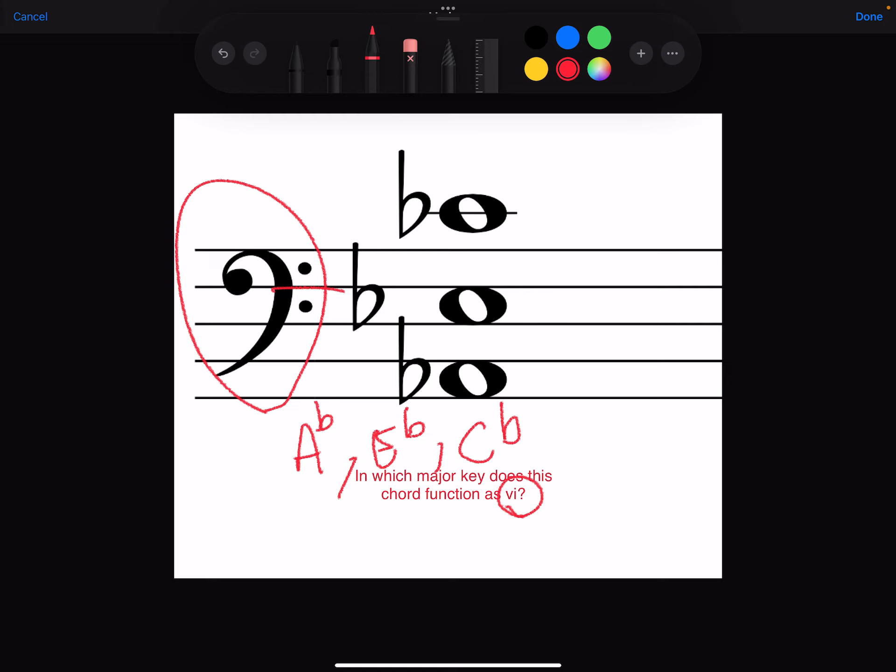And so what we have to do is figure out what key is this chord the sixth scale degree. And so we can just think of the root of the chord, A-flat. What major key is A-flat the sixth scale degree? And if we do some counting, we're going to figure out that the key of C-flat major is the key in which this chord functions as the sixth chord.